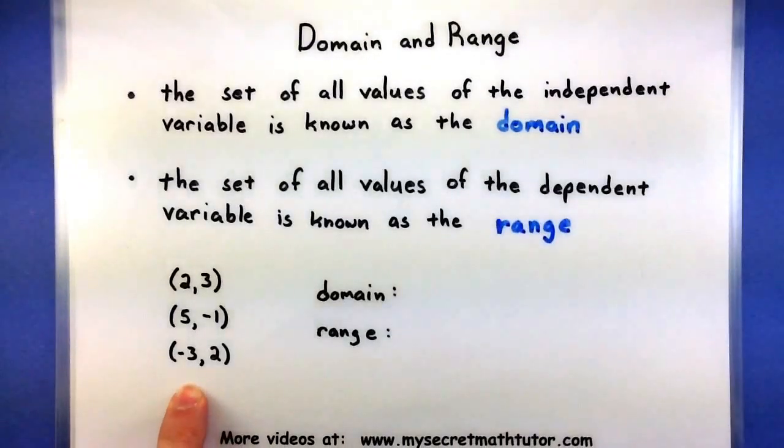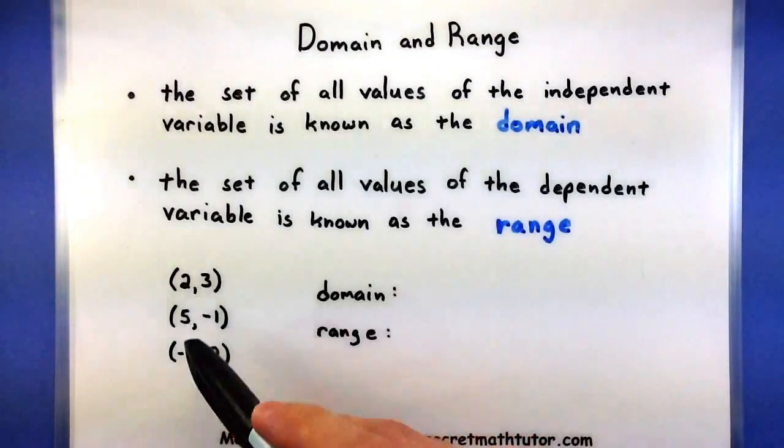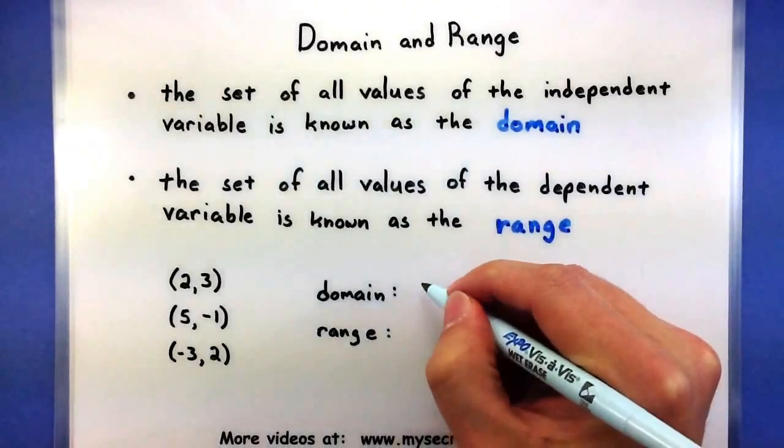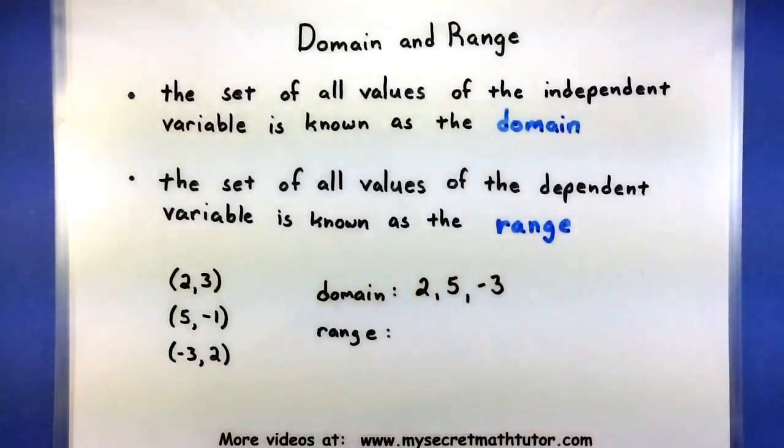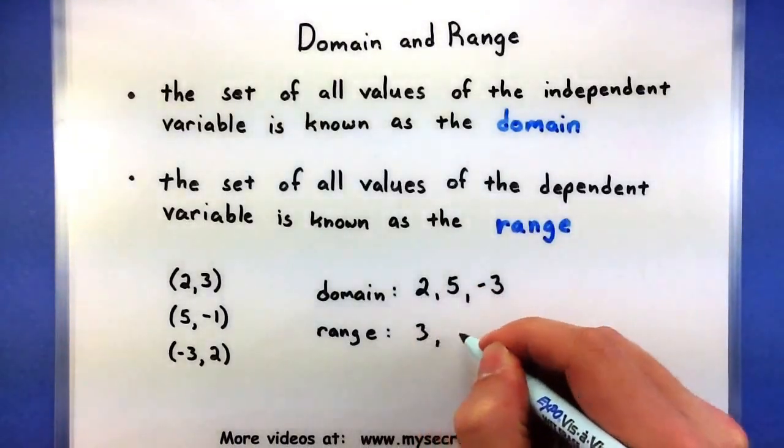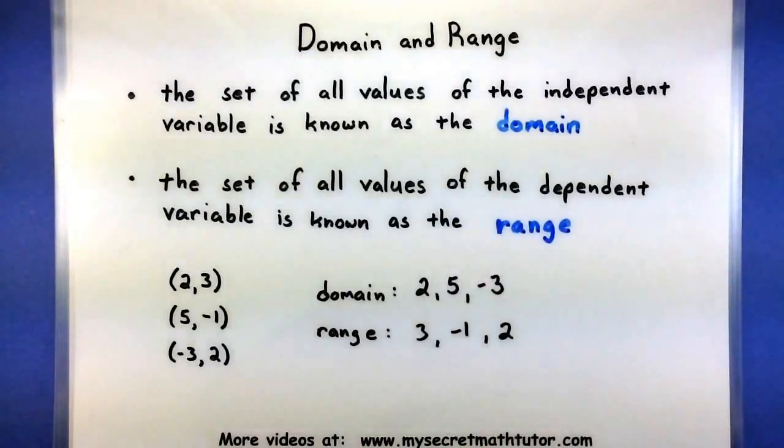So here's that function that we had actually before. If I want to talk about the domain of this function, I'm basically talking about the 2, the 5, and the negative 3. And if I wanted to, I could even list those things out. So this is the collection of all of my values that the independent variable could take on. For the range, I'm talking about all of those second components. So the 3, the negative 1, and the 2. So this represents all of the values that the dependent variable could take on.